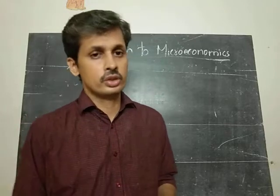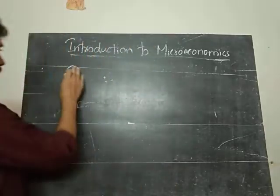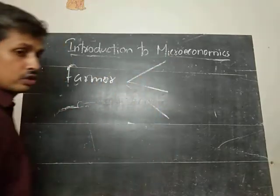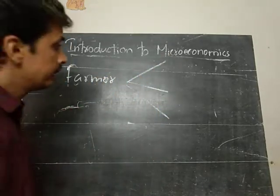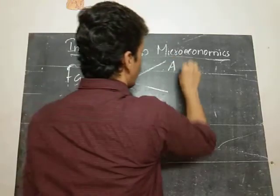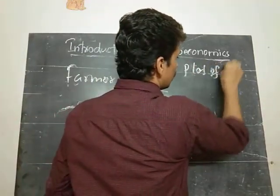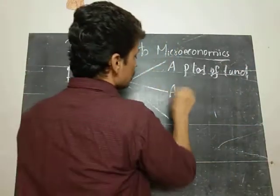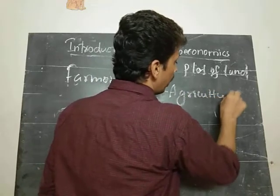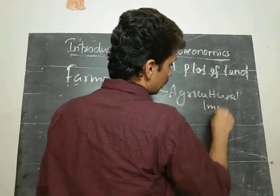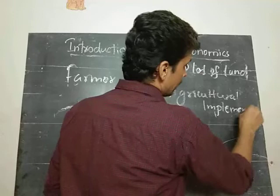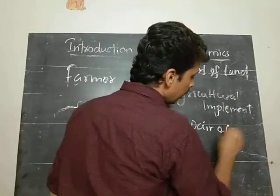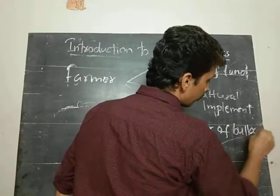Let us explain this. Take the case of a farmer. He will have some resources in his hands. What are the resources? He may have a plot of land, some agriculture implements, and some animals — a pair of bullocks. So these are the resources of a farmer.